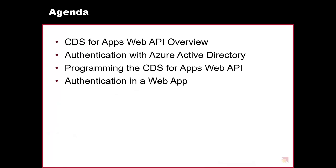I want to start with an overview of where the Common Data Service for Apps Web API fits in — we'll just call it the CDSA Web API. We're going to spend time on Azure Active Directory, creating Azure AD applications, and programming with the Azure Active Directory Authentication Library. Then we'll program the console application to retrieve and add accounts, look at metadata like option sets and custom entity definitions, and finally look at getting all this working inside a web application using best-practice security.